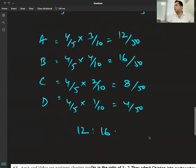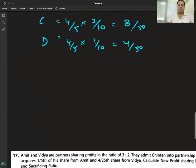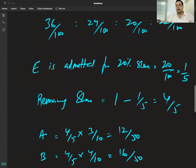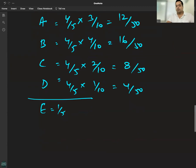E's share is one-fifth. If we work in terms of 50, then it's 10. So the new ratio calculation: 12, 16, 8, 4, and E gets 10.